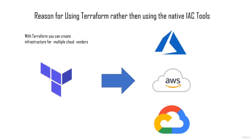Cloud vendors do provide native infrastructure-as-code tools. For example, Azure provides Azure Resource Manager with JSON templates, AWS has CloudFormation, and GCP has its own equivalent. What makes Terraform special is that if you learn Terraform, you have the potential to create infrastructure across any of these platforms without having to relearn anything extra. All you need to do is change the provider name and the resource configuration.